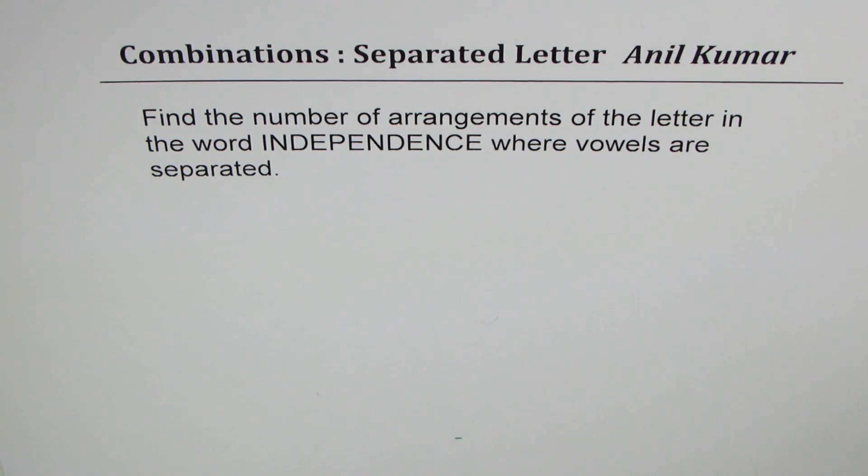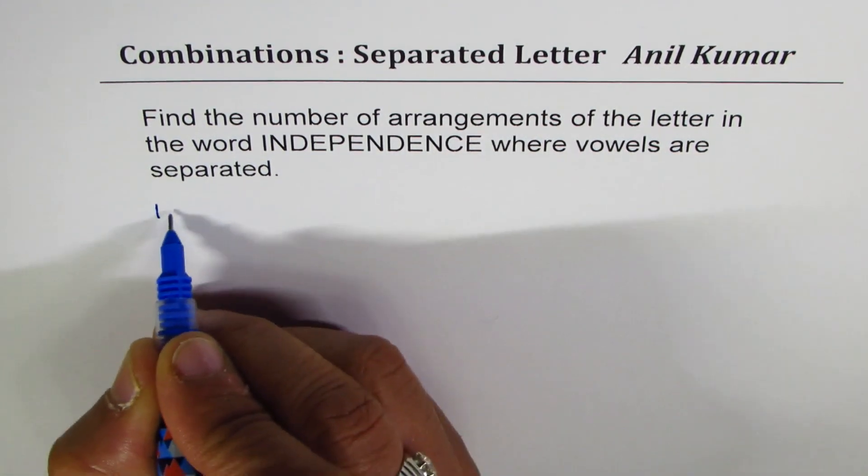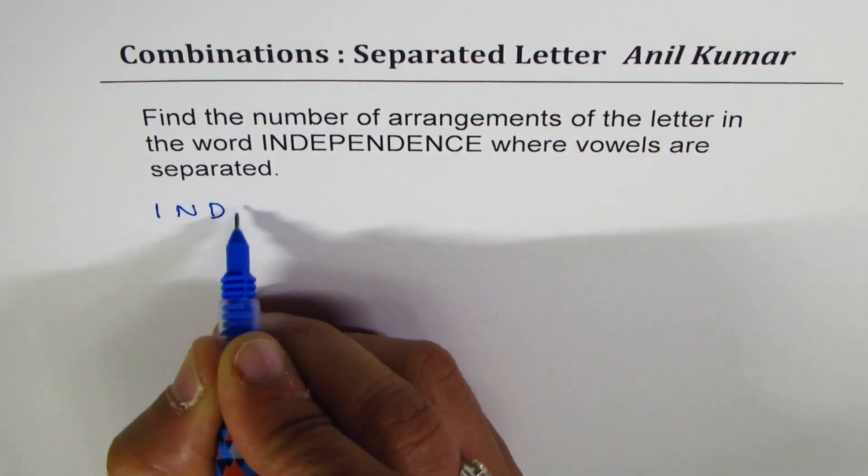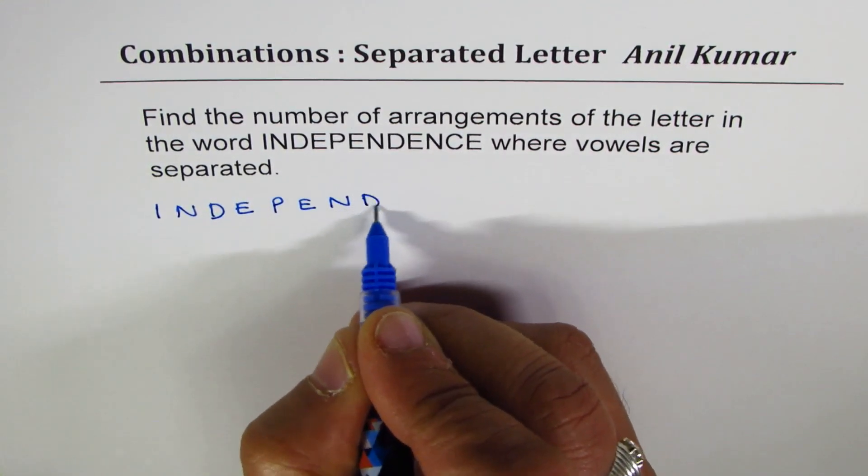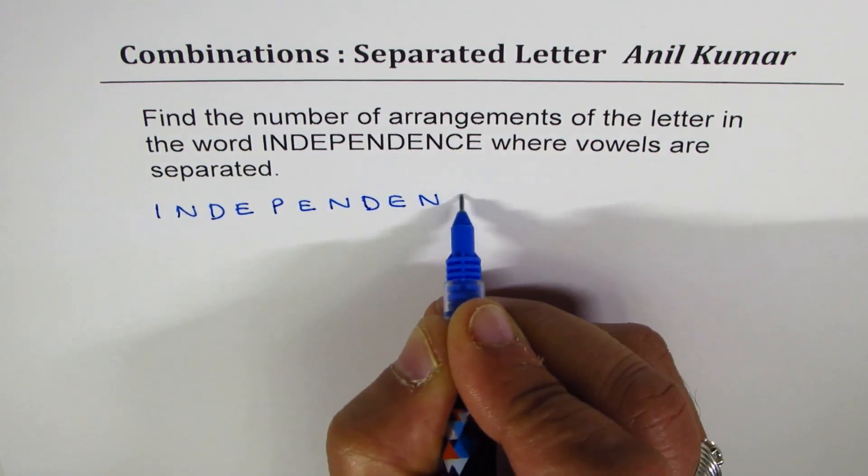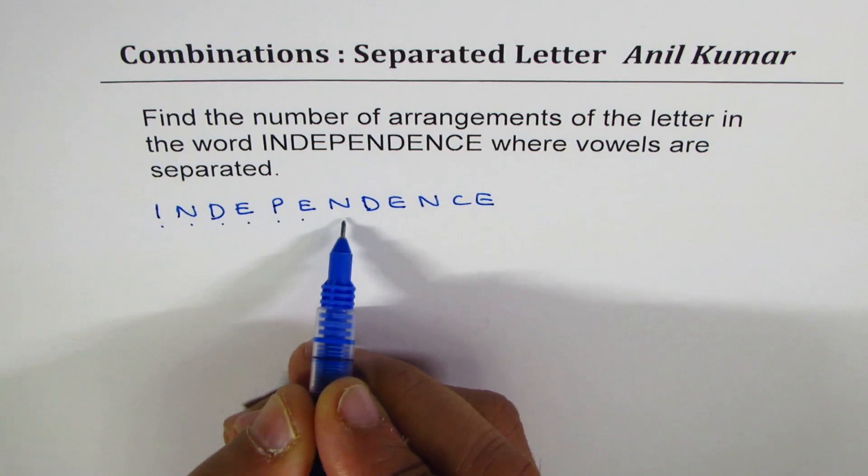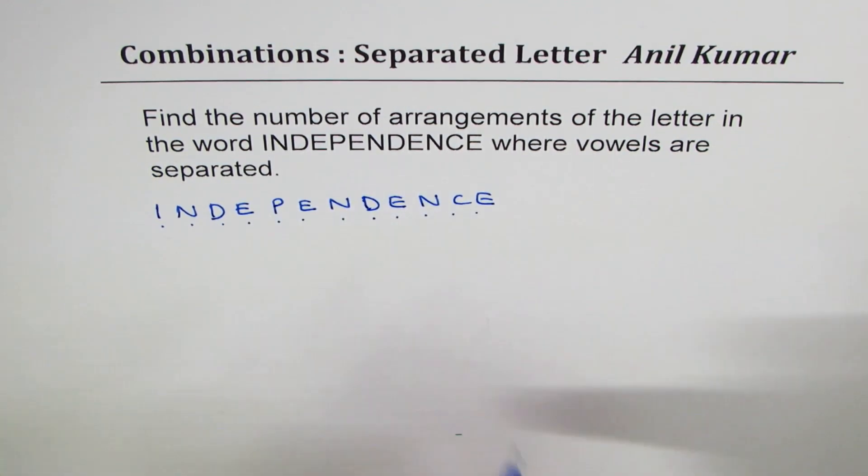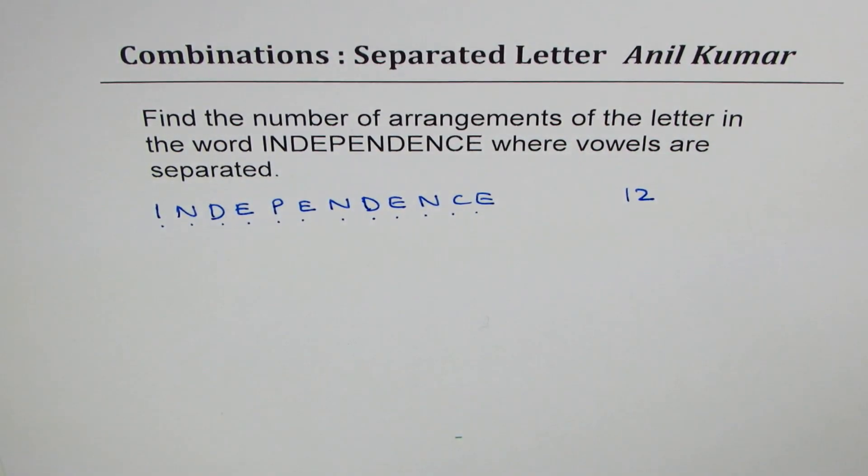Now, in one of our videos, I've explained a method which I'm going to apply here. I'll provide you with the link of that method also. Now, let's look into the word independence. It is I-N-D-E-P-E-N-D-E-N-C-E. So, it has 12 letters, right?